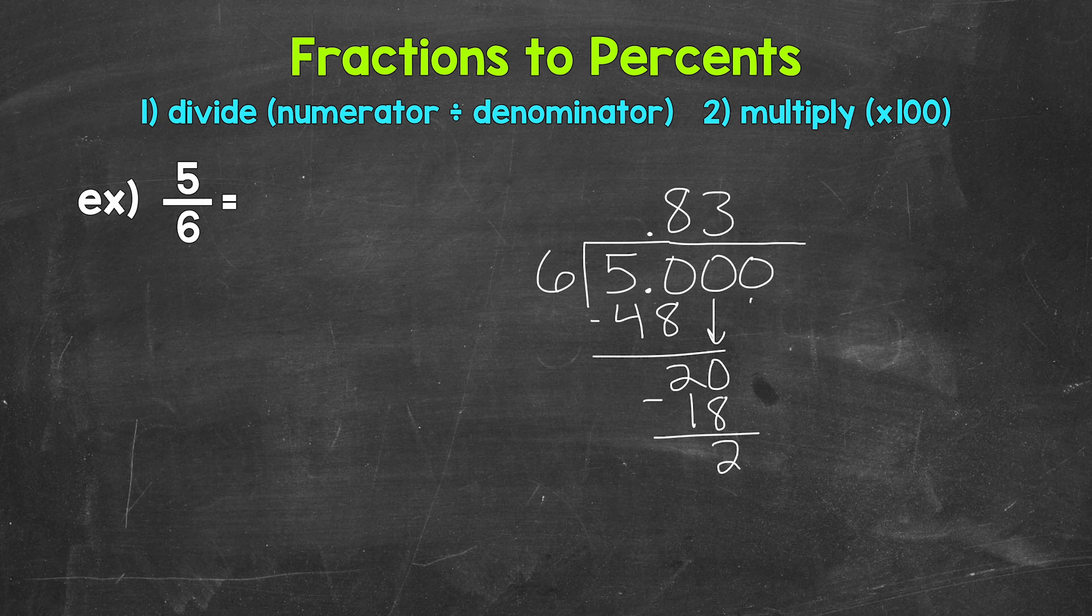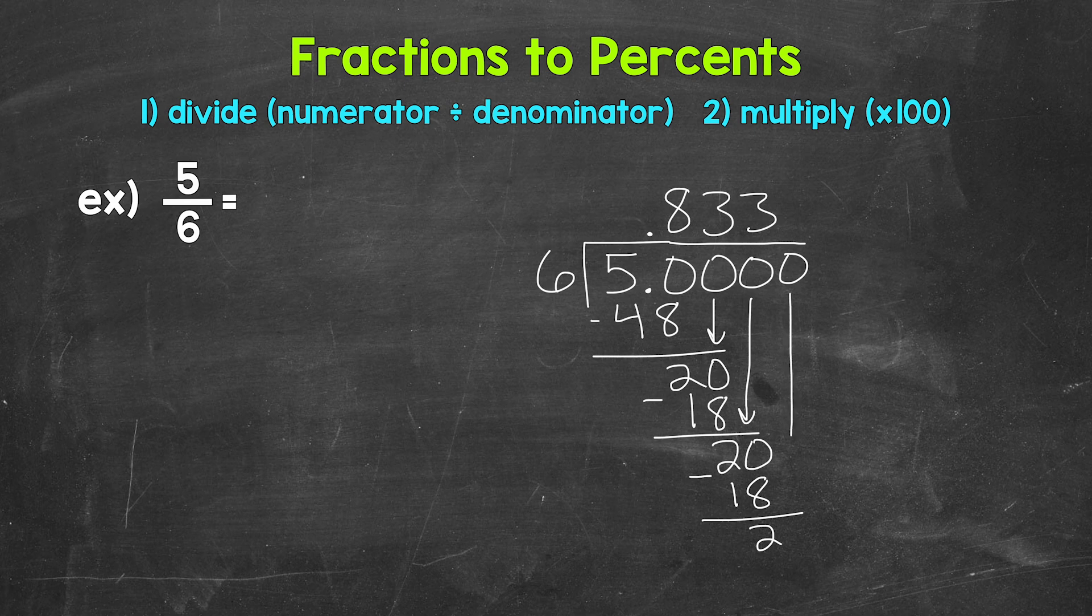Let's use another zero to continue on. We get 20 again. 20 divided by 6 is 3. 3 times 6 is 18. 20 minus 18 is 2 again. You may start recognizing a pattern here. This is going to give us a repeating decimal. We get 20 again, 20 divided by 6 is 3, multiply 3 times 6 is 18, subtract, and then another 2. This is going to continue on forever. It's going to repeat forever.